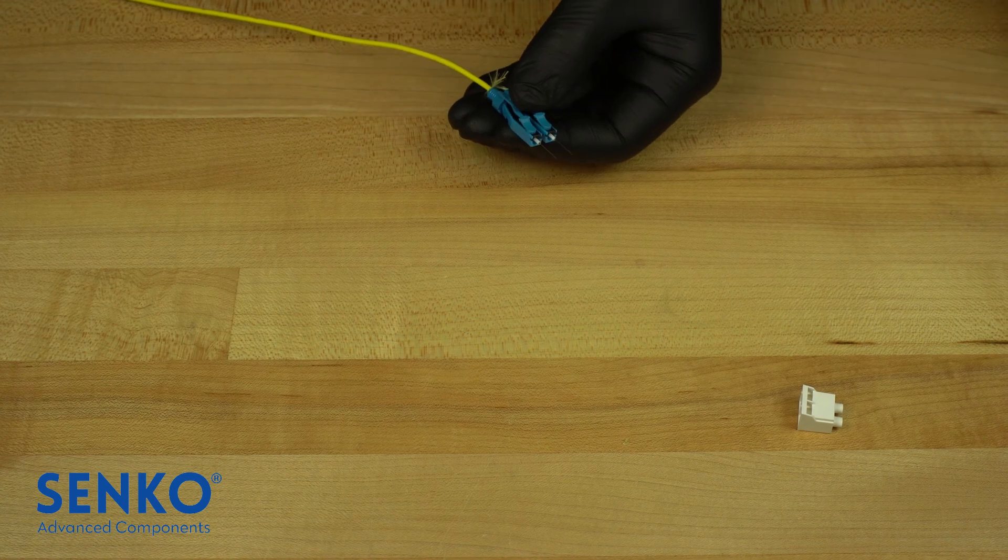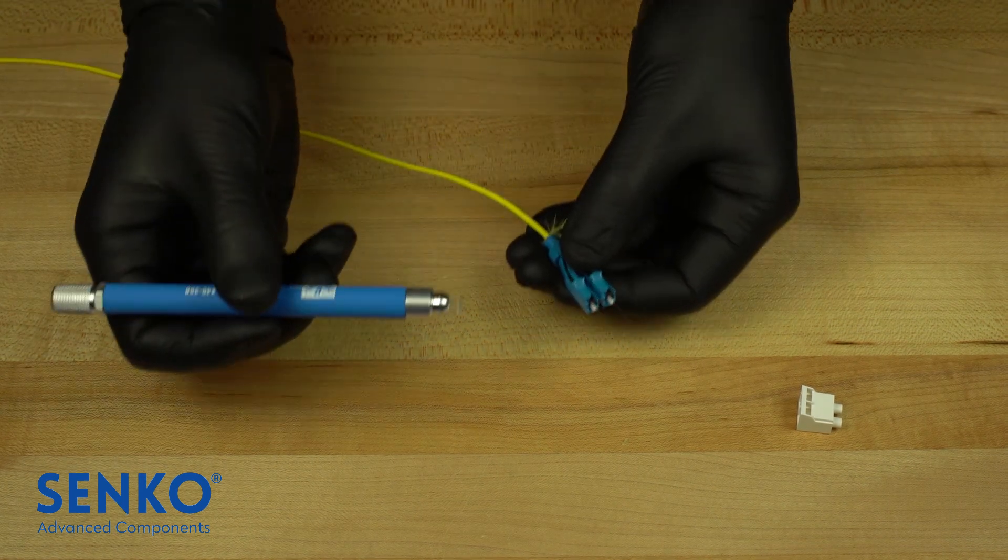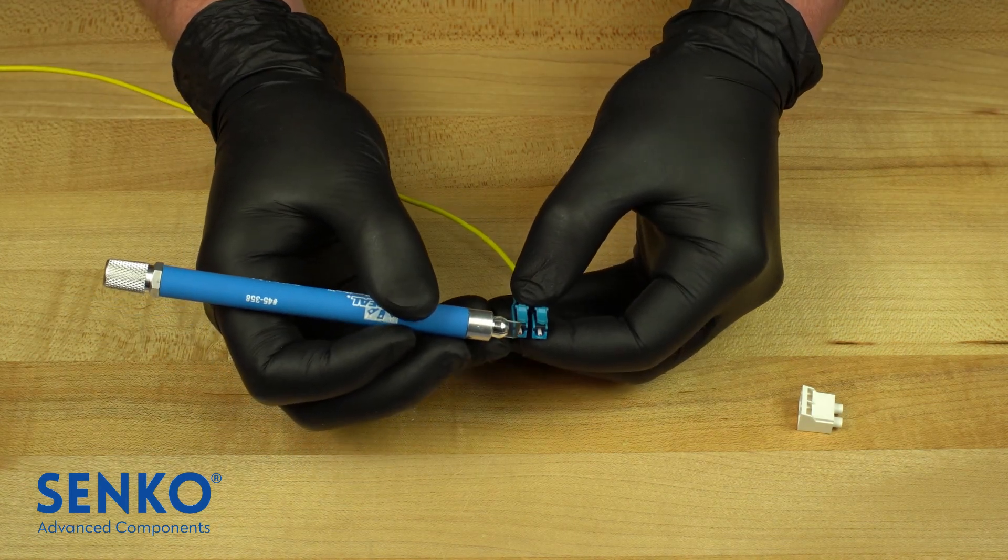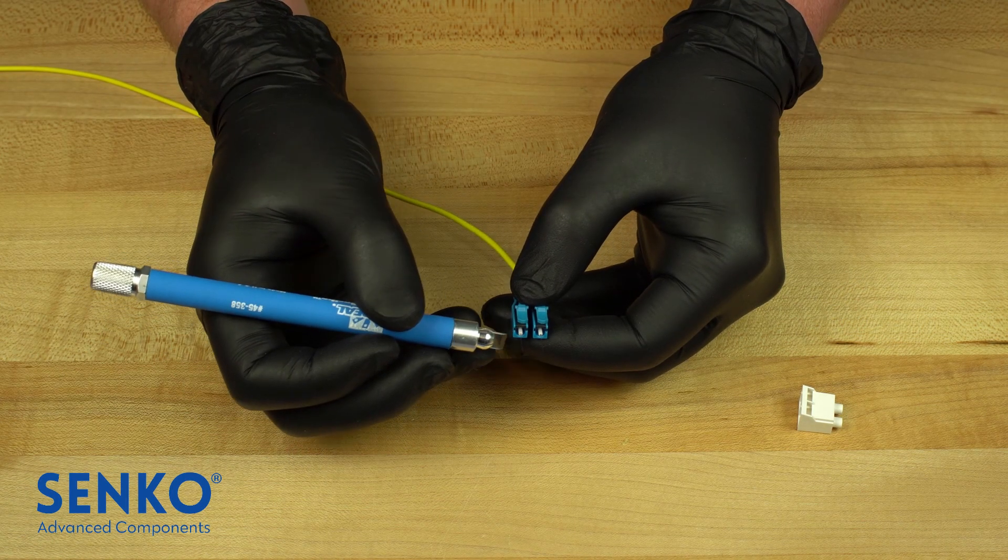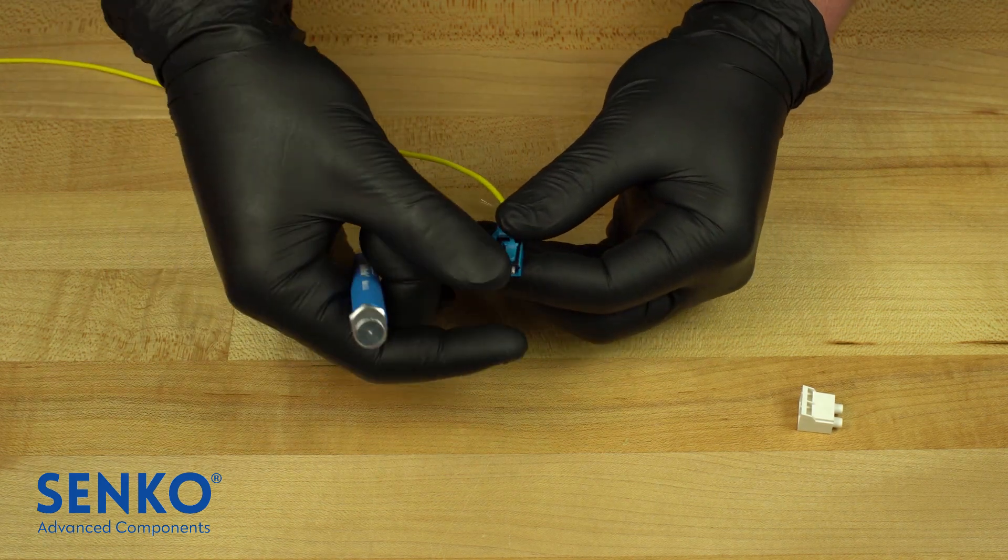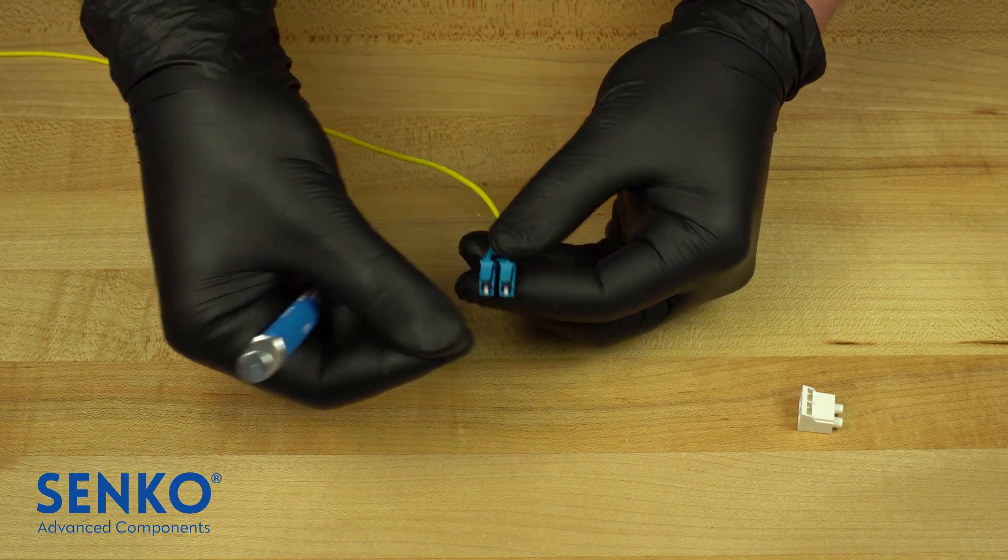After curing, the fiber must be cleaved. This may be done a few different ways, but here we will do it manually by taking a scribe and gently scratching the bare fiber as close to the ferrule tip as possible. Then pinch the bare fibers and pull away perpendicular to the ferrule tip.